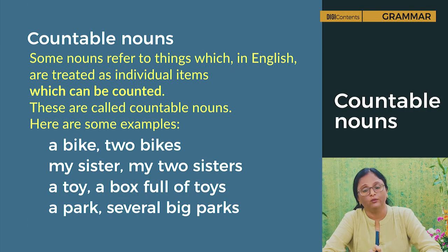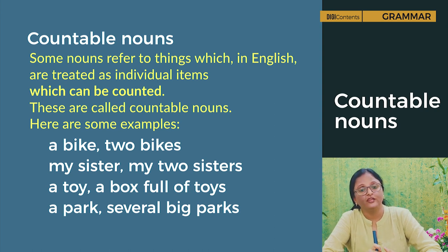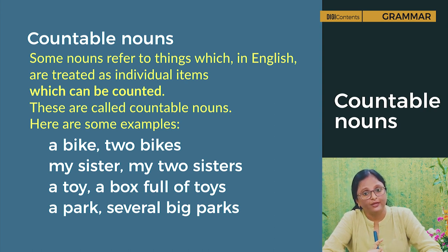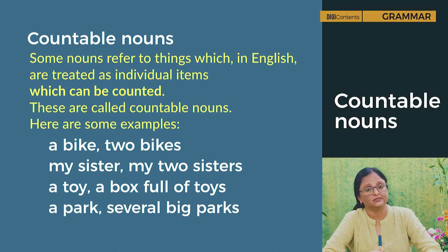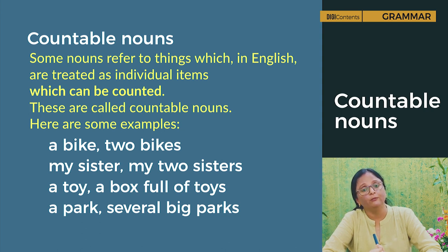Nouns can also be countable nouns. Some nouns refer to things which in English are treated as individual items which can be counted — these are called countable nouns. Here are some examples: a bike, two bikes; my sister, my two sisters; a toy, a box full of toys; a park, several big parks.